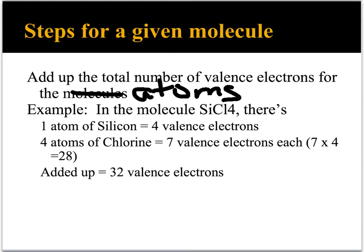The first step is to add up the total number of valence electrons for all the atoms in the molecule. For example, in the molecule SiCl4, there's one atom of silicon that has four valence electrons and four atoms of chlorine, each with seven valence electrons. Seven times four is 28. When you add 28 and four, you get 32.